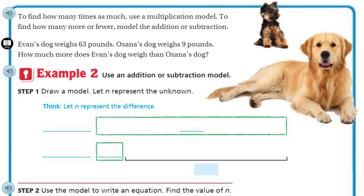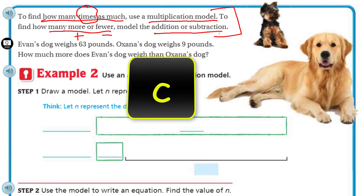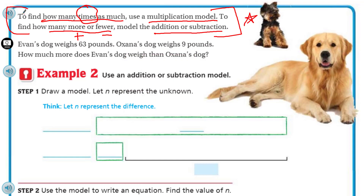To find how many times as much, use a multiplication model — it says that right here. 'How many times' — that 'times' is a key word; use a multiplication model. This is important: to find how many more or fewer — use an addition or subtraction model. This is huge, you guys. I would write this in my notes if I had a math journal.